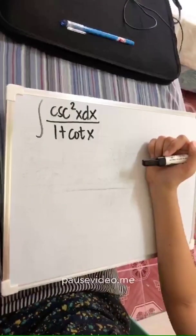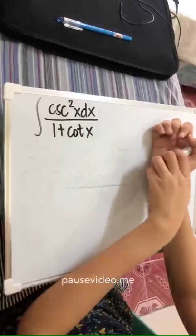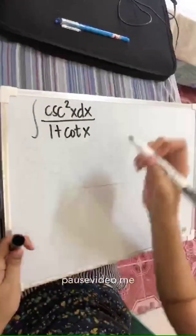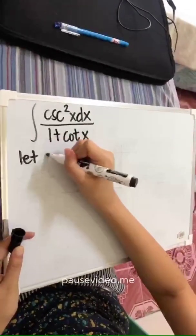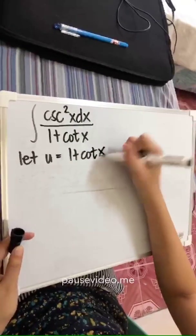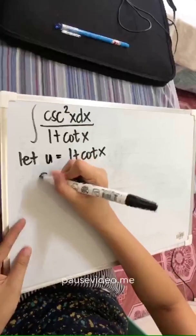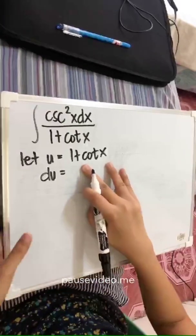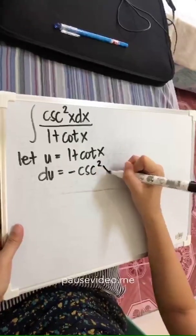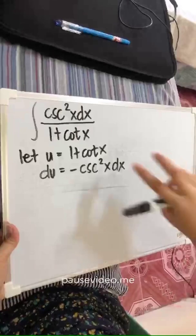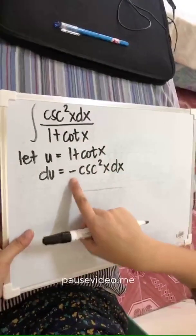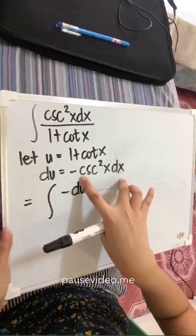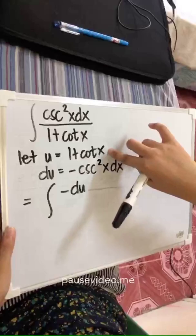Another example: the integral of cos²x dx all over 1 plus cos x. In solving this kind of problem, you just have to do trial and error. If we try to let the denominator as our u, let u equal to 1 plus cos x. From differential calculus, the derivative of a constant is 0, and the derivative of cos x is negative sin x dx. As you can see, the numerator differs only by a negative sign, so we can write it as negative du.